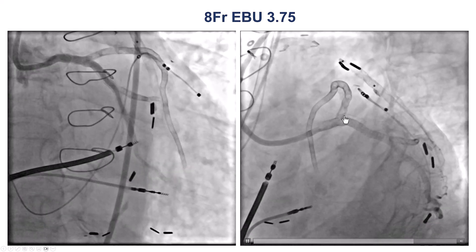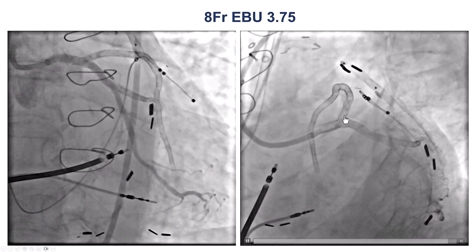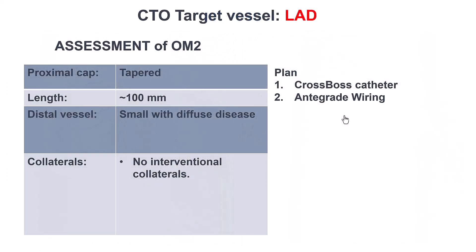You can see it's an ostial occlusion. There's maybe some contrast entry into the LAD. So we have an entry into the vessel. The length is long, the full stent is occluded, the distal vessel is small, and there are no interventional collaterals.